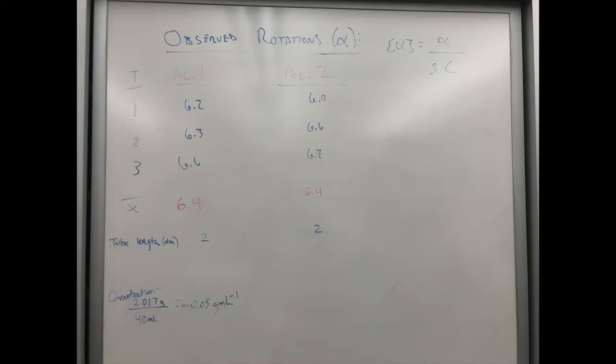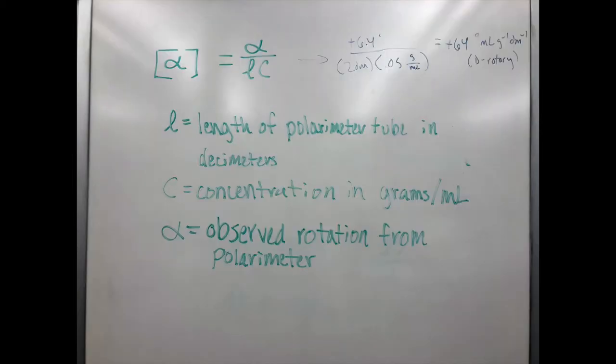Using both polarimeters, several measurements were taken and used to define an average observed rotation for the sucrose sample. This number was then plugged into the specific rotation equation using 2 decimeters for tube length and 0.05 grams per milliliter for concentration, ultimately giving a specific rotation of 64 degrees.